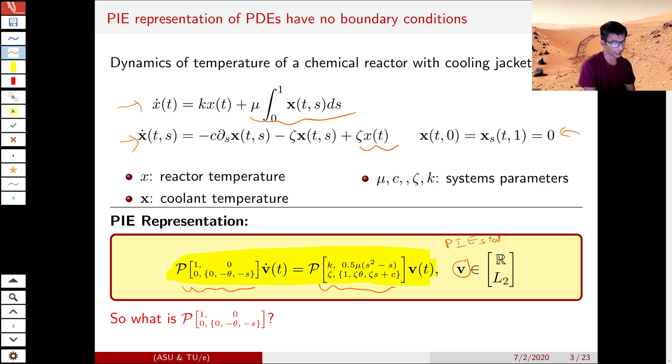And unlike PDEs, the PI state is unconstrained. There are no boundary conditions, which is present in PDE. And these PI operators are bounded operators. So the PI representation already is better than PDEs because it does not have unbounded operators. It does not have any state constraints. We'll talk about this more later.